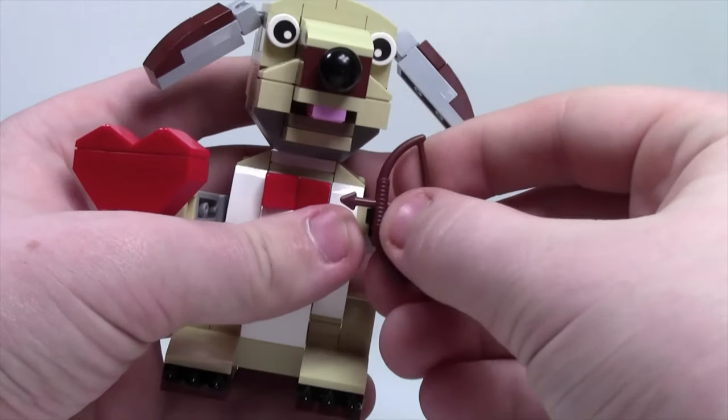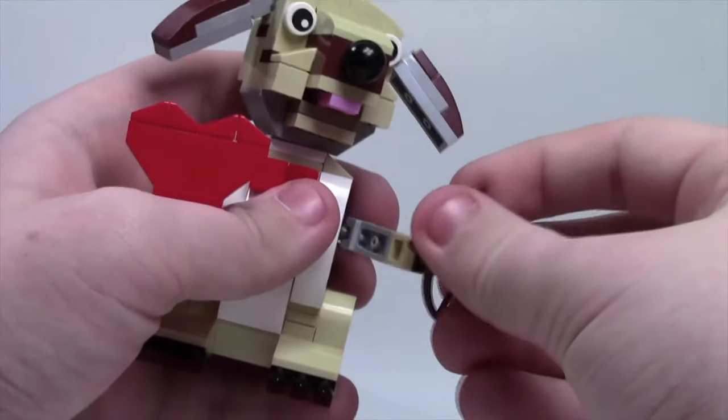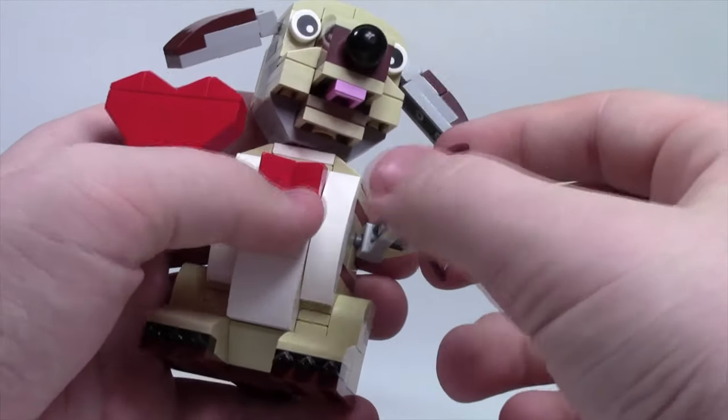Off in this hand is a bow and arrow and like he's like shooting the heart which is kind of cool and again the bow does come off and it's a minifigure scale bow.